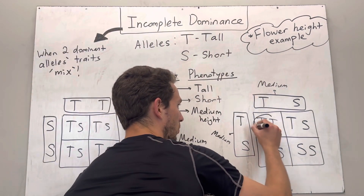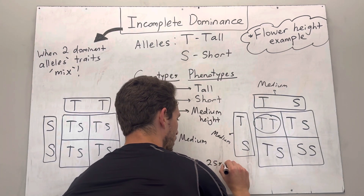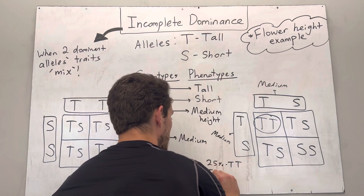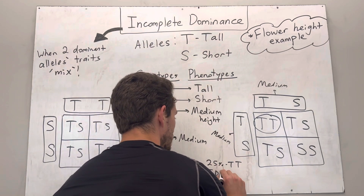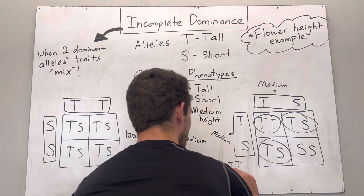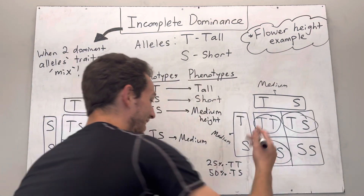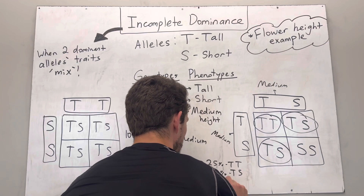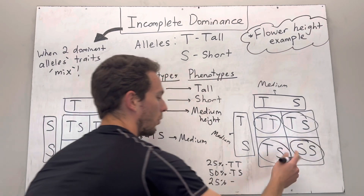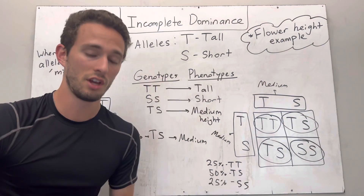So what does that equate to? Well, 25% — one-fourth — will be big T, big T, which will be a tall plant. 50% — two of the four — will be big T, big S, which will be a medium-sized plant. And lastly, 25% — one out of four — will be big S, big S, which will be a short plant.